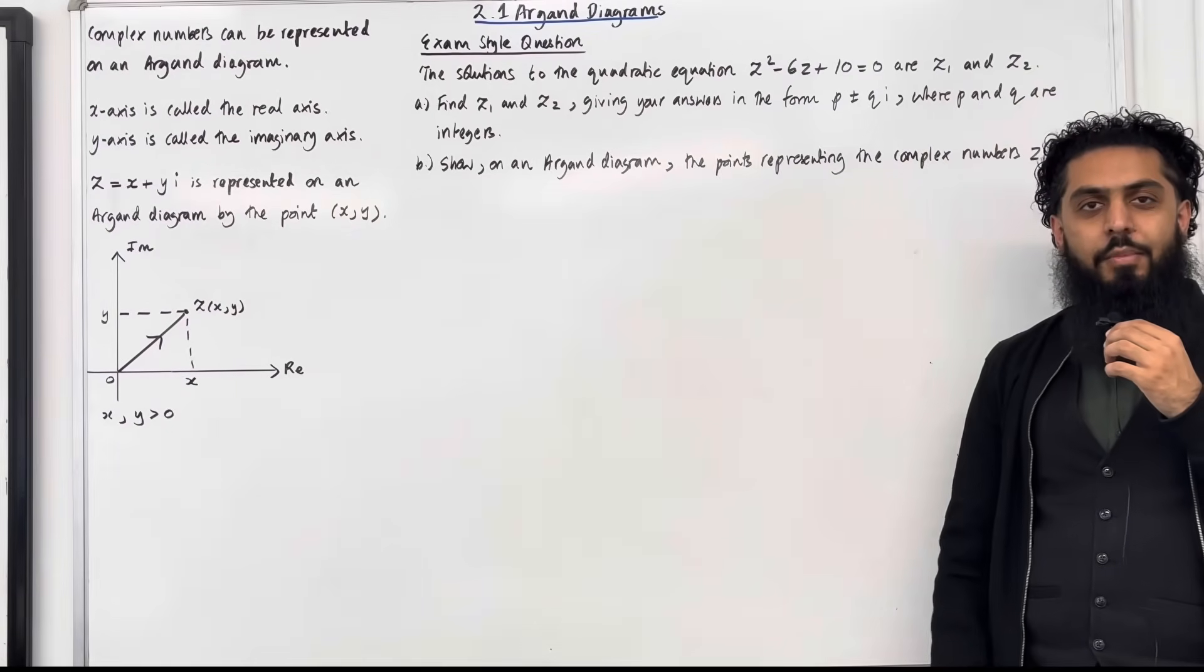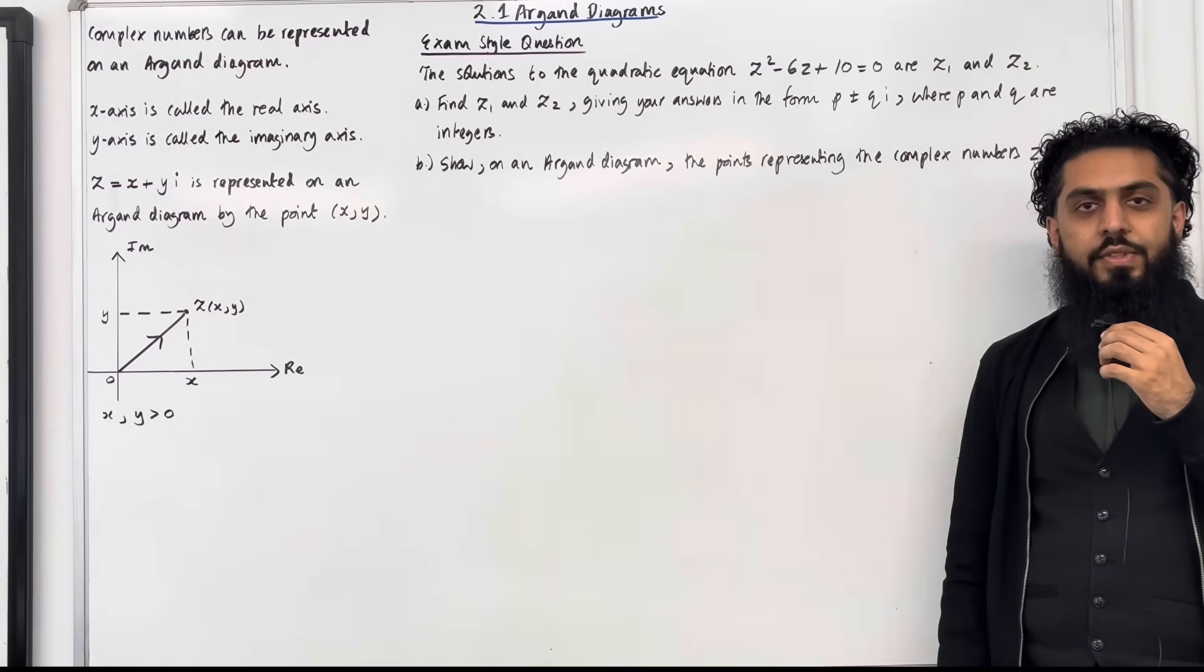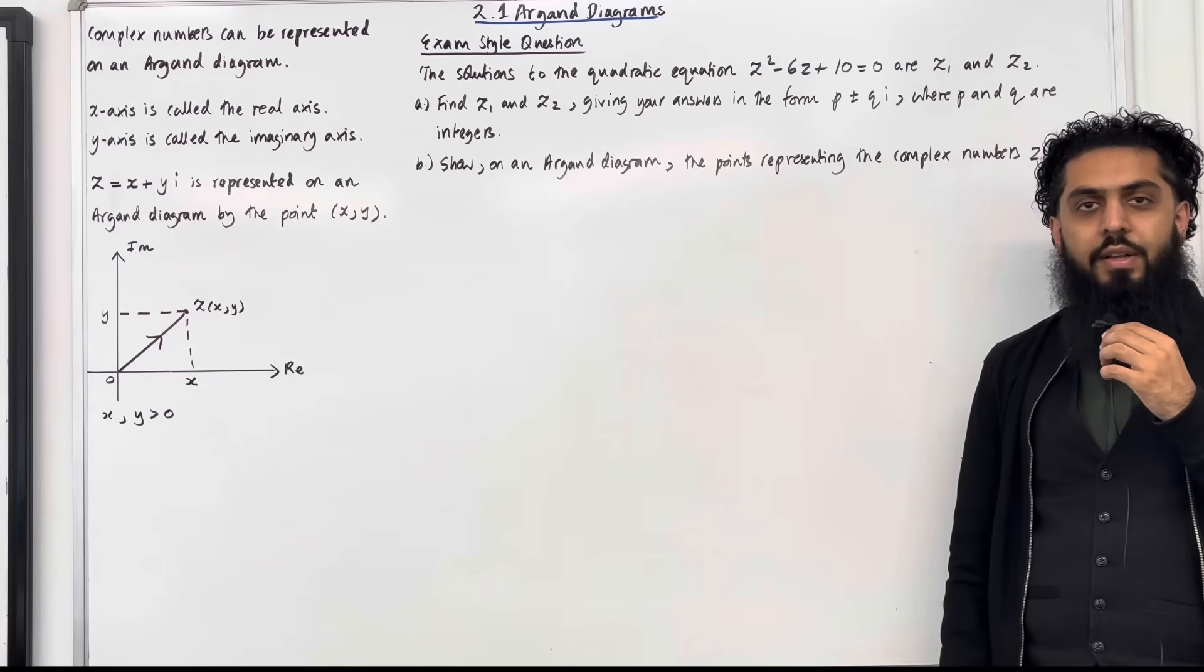Welcome back. In this YouTube video I'll be looking at 2.1 Argand diagrams. 2.1 represents Chapter 2, Section 1 of the Corpio 1 textbook.